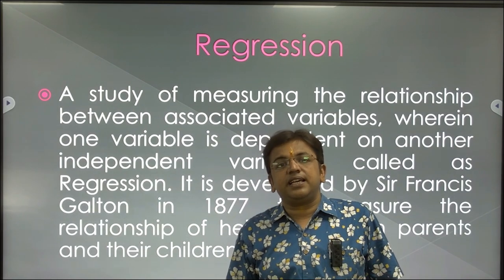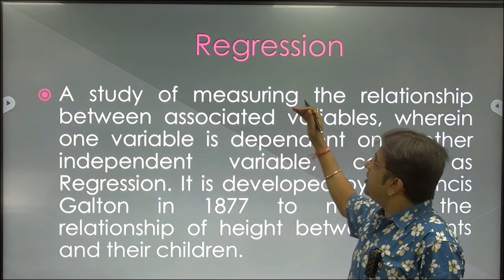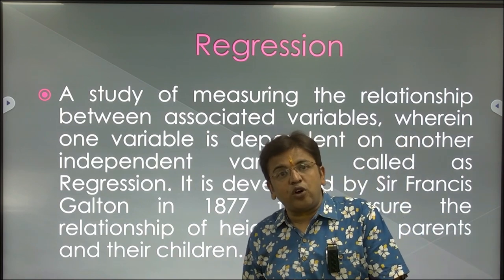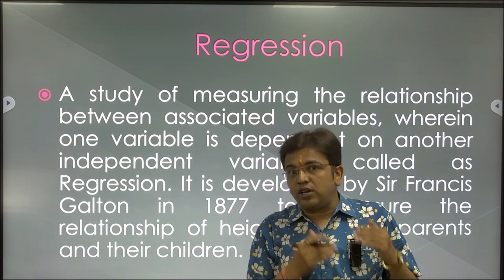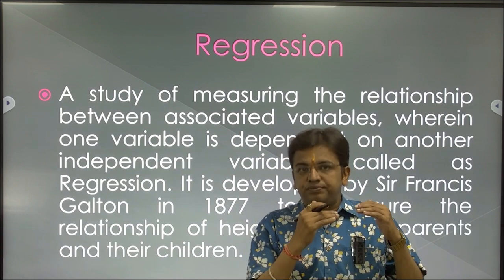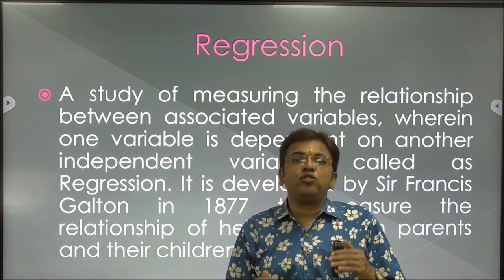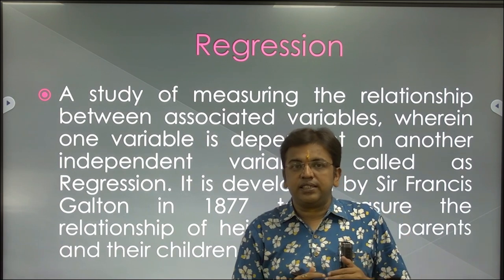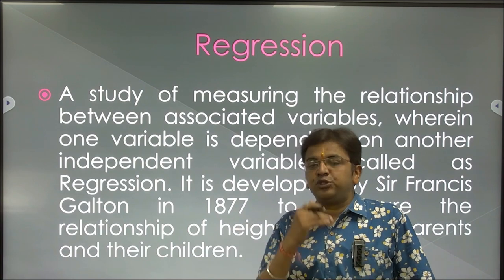Sir Francis Galton in 1877 gave regression analysis, in which he studied about the height of a son and a father. He said that a tall son has a tall father, and a short father has a short son — meaning the height of a son depends upon the height of his father. So regression, by stepping back, is predicting the future.